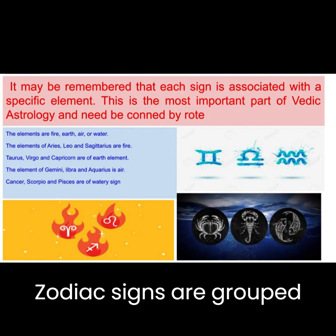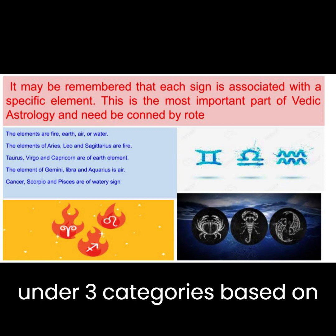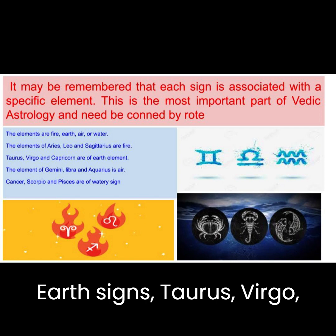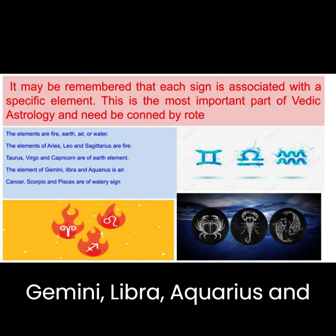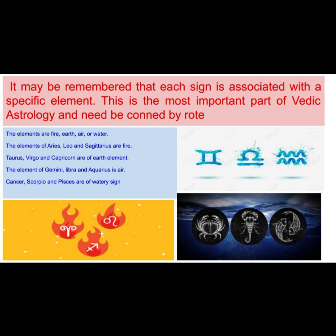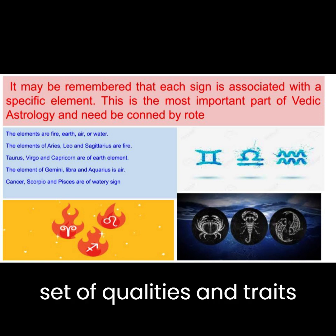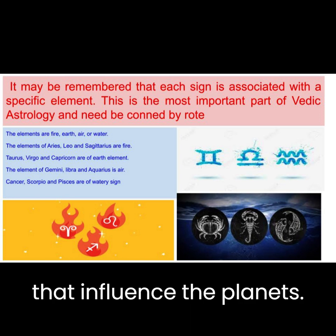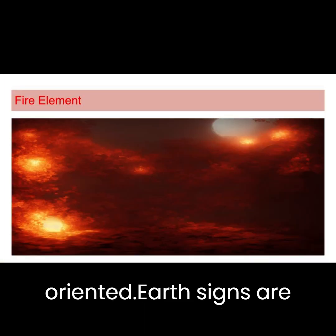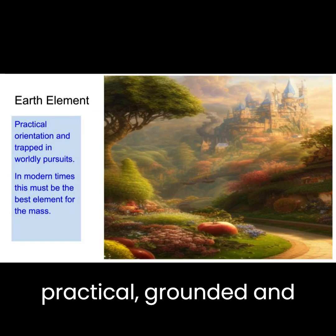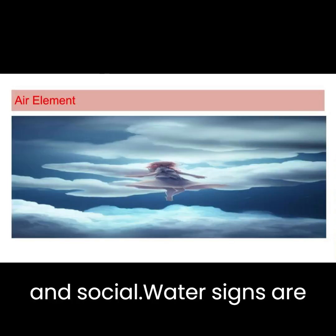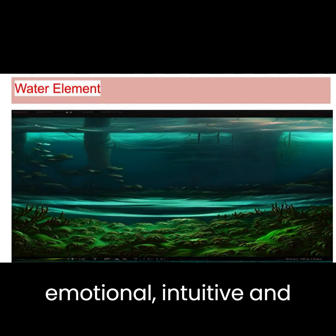The twelve zodiac signs are grouped under three categories based on their nature: fire signs — Aries, Leo, Sagittarius; earth signs — Taurus, Virgo, Capricorn; air signs — Gemini, Libra, Aquarius; and water signs — Cancer, Scorpio, Pisces. Each category has a particular set of qualities and traits that influence the planets. Fiery signs are passionate, energetic, and action-oriented. Earth signs are practical, grounded, and stable. Air signs are intellectual, communicative, and social. Water signs are emotional, intuitive, and creative.